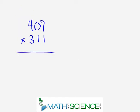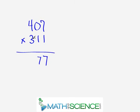Our next problem is 407 times 311. We notice there's a zero here, so we expect some nice simplifications. We start as always in the right-hand column: seven times one gives us seven. Next, we expand and do a crisscross: seven times one is seven, plus zero times one is zero, so we're left with simply seven again. Next, we expand one more time and do the three-way crisscross: seven times three is 21, four times one is four, so 21 plus four gives us 25. The zero contributes nothing, so we put a five and carry a two.